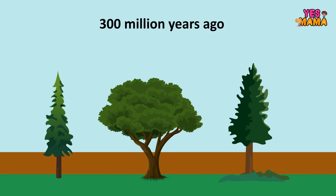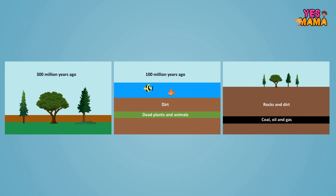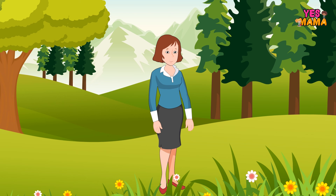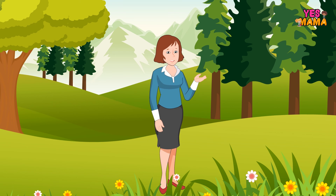Coal and oil were created from plants and animals that lived very long ago. They died and were buried under the earth. Over millions of years they became coal and oil. Because we can't make more of them, we may run out of them. Such resources are called non-renewable. It is very important to conserve them — to take care of them and not waste them.